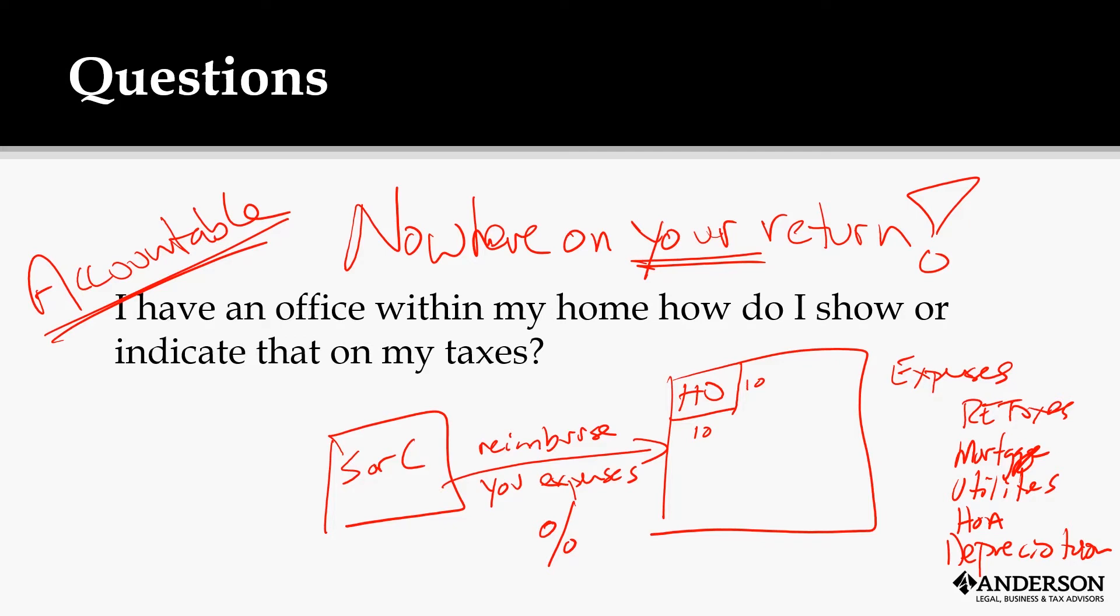They can reimburse you for things that you incur on their behalf. The most important ones are things like your computer, your cell phone, your home, your utilities that you're using for the convenience of the employer. Don't do a home office, this is a business reimbursing you for the use of your home at their convenience, which changes up the rules.